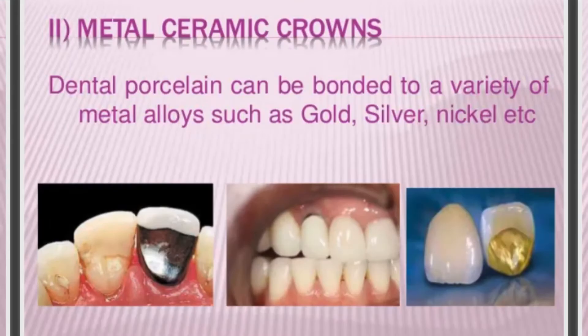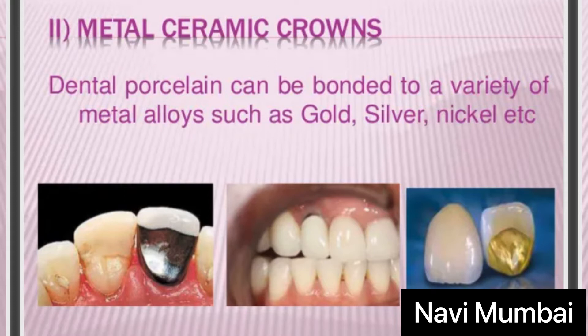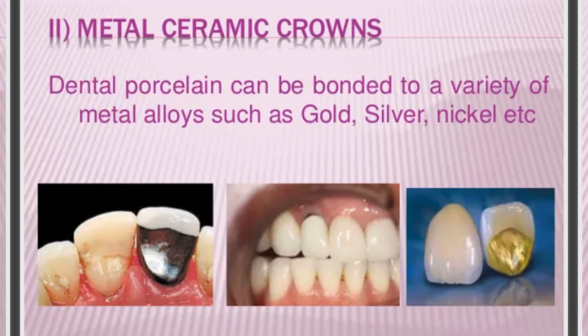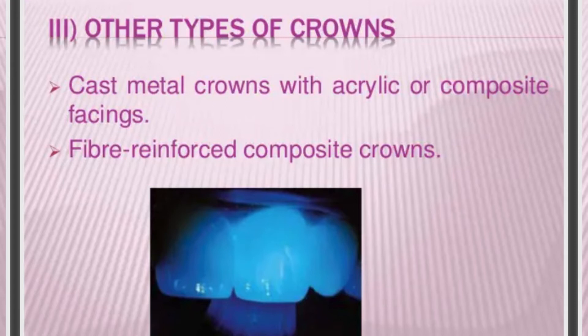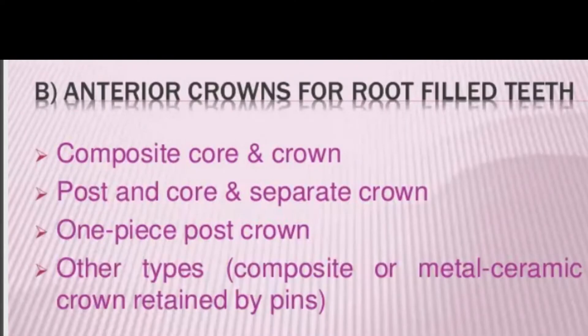Metal-ceramic crowns are the second most widely used. Dental porcelain can be bonded to a variety of metal alloys such as silver and nickel-chrome. Other types of crowns include cast metal crowns with acrylic or composite facing, and fiber-reinforced composite crowns.